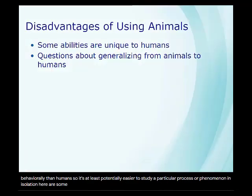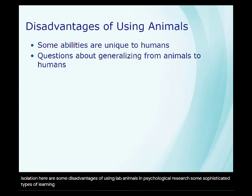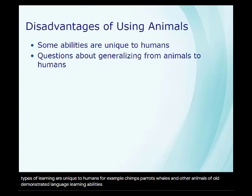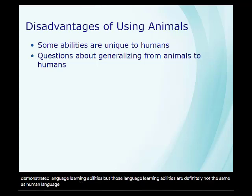Here are some disadvantages of using lab animals in psychological research. Some sophisticated types of learning are unique to humans. For example, chimps, parrots, whales, and other animals have demonstrated language learning abilities, but those abilities are definitely not the same as human language learning.